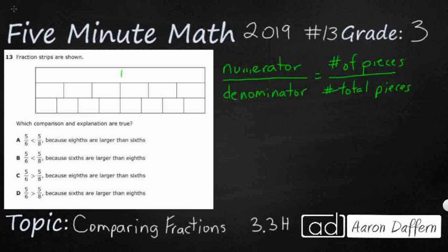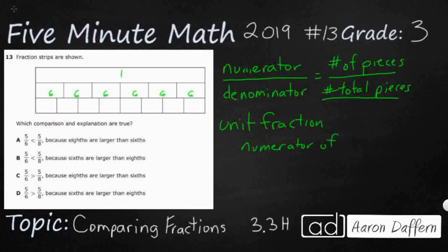We don't have every single fraction strip — we just have two separate fractions. So counting the second row: 1, 2, 3, 4, 5, 6. The second row has 6 total pieces, so that's going to be my denominator. We'll label each of these as sixths. Each of these is a unit fraction — a unit fraction has a numerator of 1, so these are all 1/6.